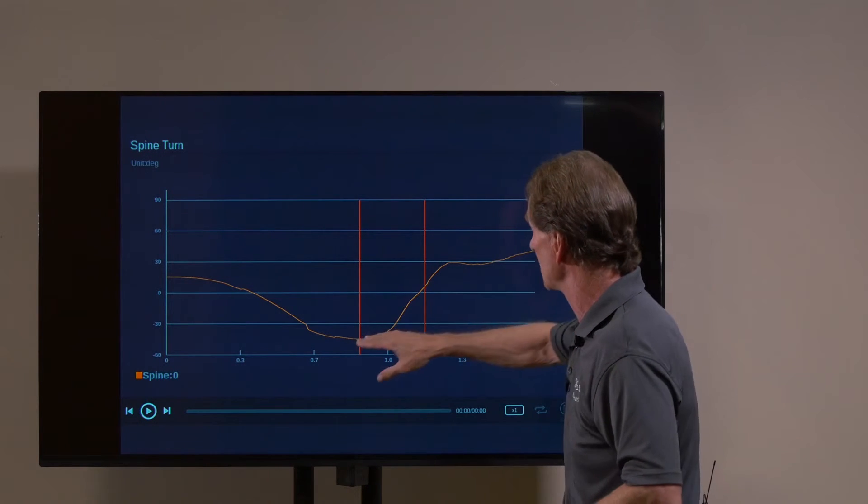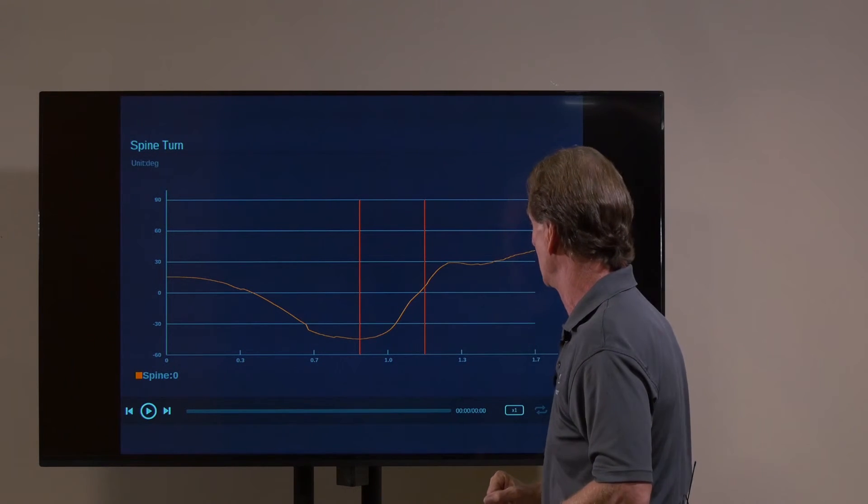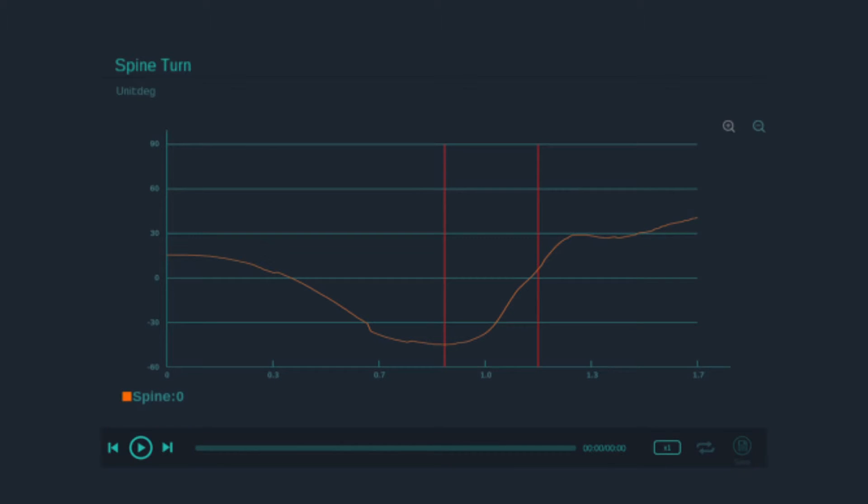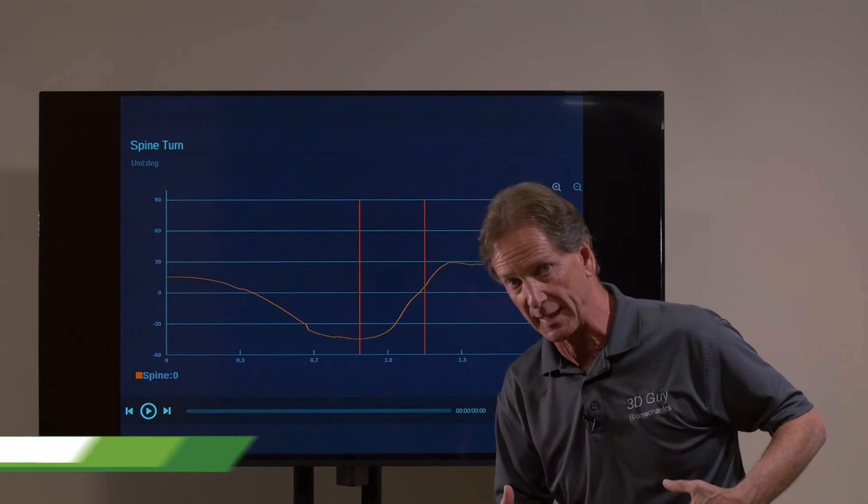So immediately we see in the downswing that that starts to curve up. That's now telling us that the coil is closing very rapidly and that the ribcage is coming into the downswing.